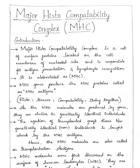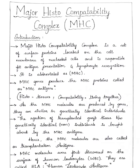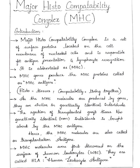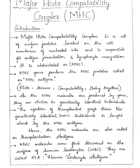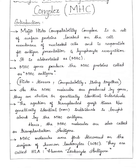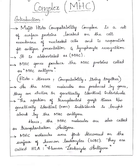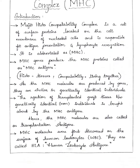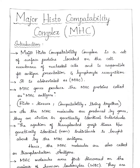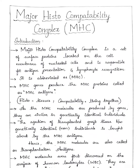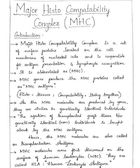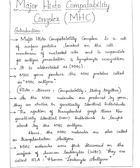Major Histocompatibility Complex is a set of surface proteins located on the cell membrane of nucleated cells, and is responsible for antigen presentation and lymphocyte recognition. It is abbreviated as MHC. MHC genes produce the MHC proteins called MHC antigens.